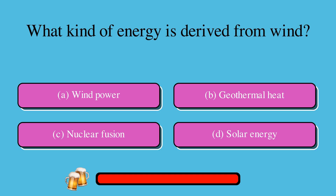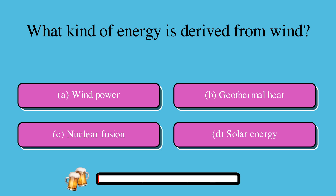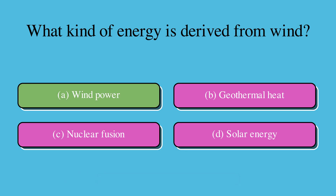What kind of energy is derived from wind? A. Wind power, B. Geothermal heat, C. Nuclear fusion, or D. Solar energy. The correct answer is A. Wind power.